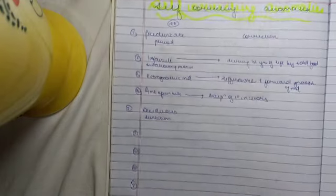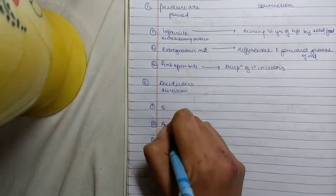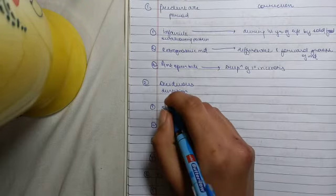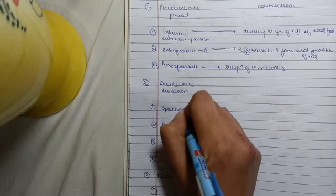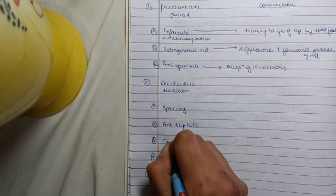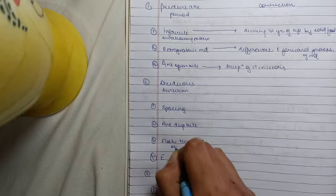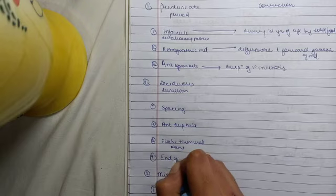For the deciduous dentition, you must remember SAFE. S stands for spacing, A stands for anterior deep bite, F stands for flush terminal plane, E stands for end-on-end relation.